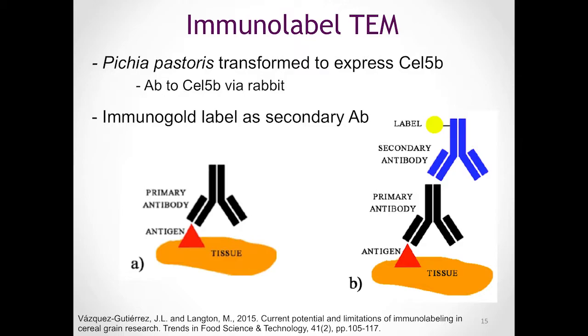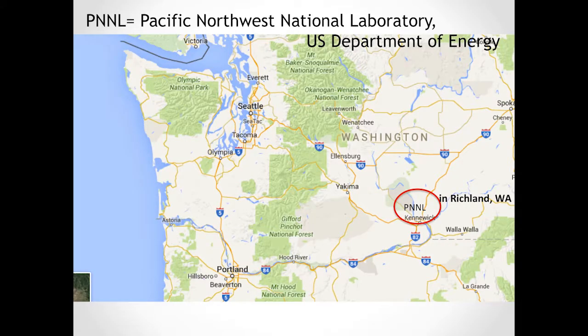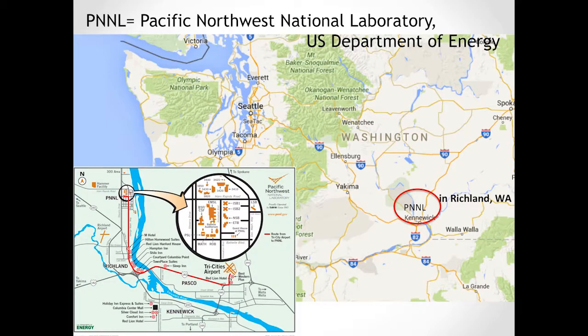So again, the gold particle on the secondary antibody recognizes the primary antibody, which recognizes our enzyme of interest, and shows up on the TEM. I had some help with the TEM from technicians at PNNL, the Pacific Northwest National Laboratory in Richland, Washington. This is a really large research campus owned by the US Department of Energy, with many different complexes there.